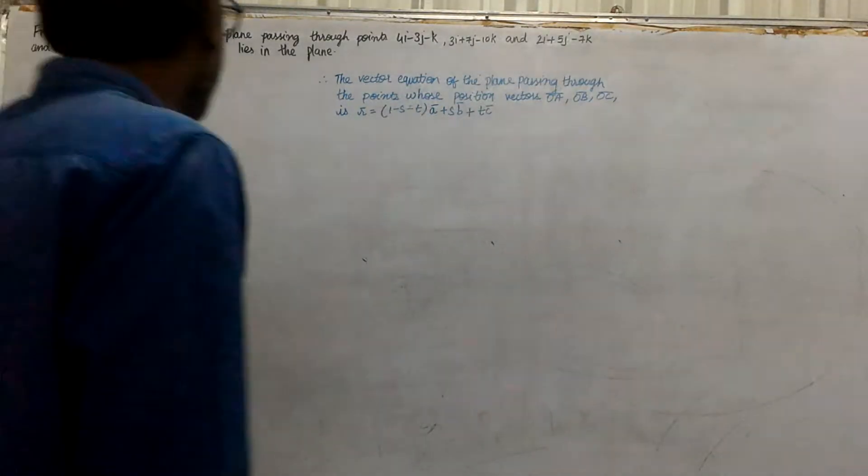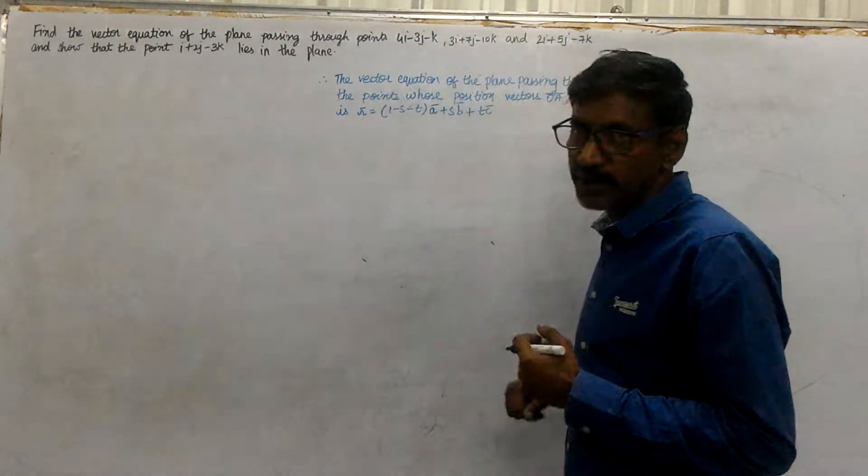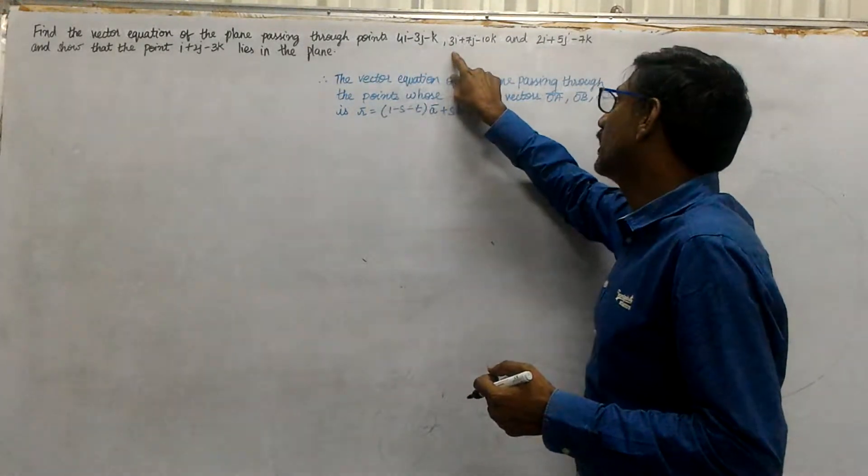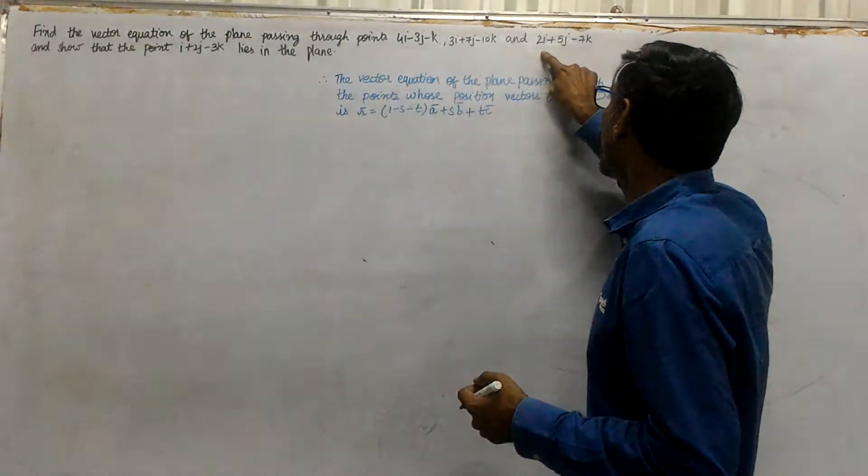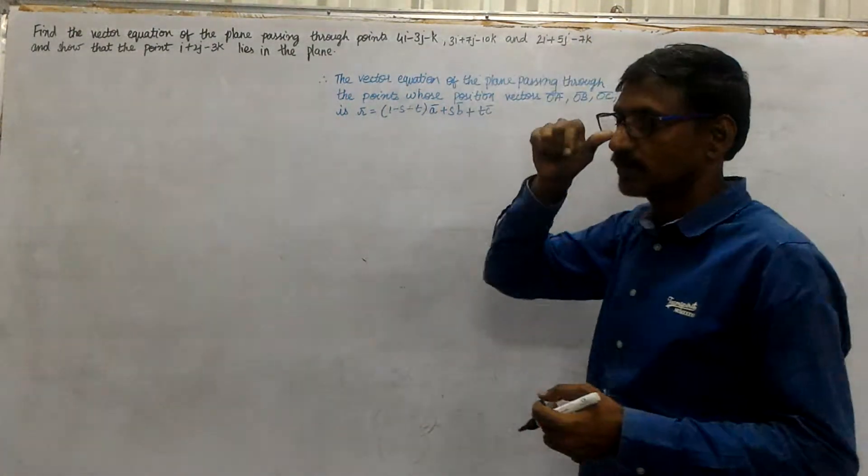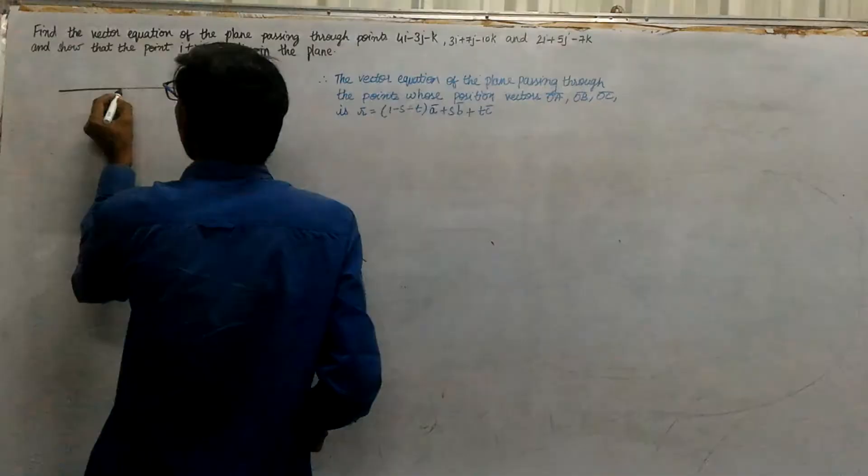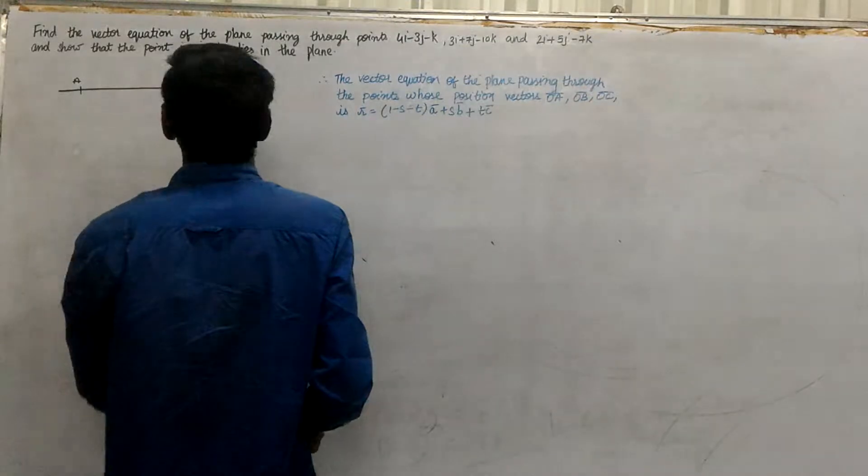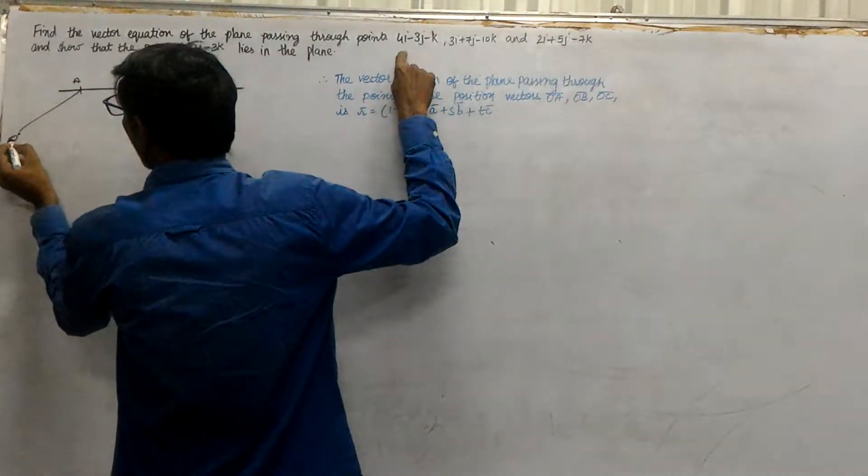Find the vector equation of the plane passing through the points 4i-3j-k, 3i-7j-10k, and 2i+5j-7k. Now we have 3 points. The first point is A, whose position vector OA is given by 4i-3j-k.